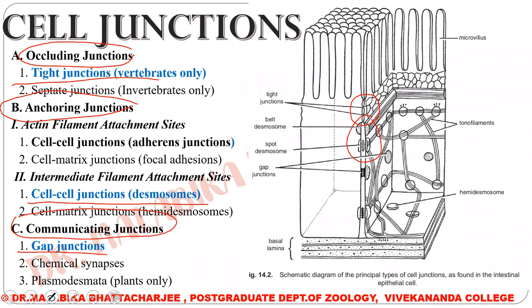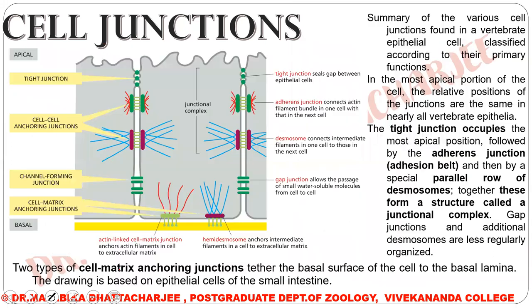They help in chemical synapses also. So those are the junctions we will be restricting ourselves to for our class. If we have an overview of the various junctions we will be seeing, and the positions in which they appear when two cells are adjacent.